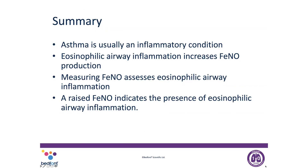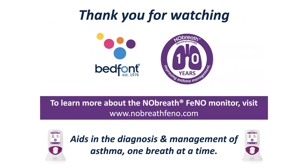The key takeaway is that asthma is an inflammatory condition — specifically eosinophilic airway inflammation — and we know that eosinophilic airway inflammation increases FeNO production. If we measure FeNO production by doing a fractional exhaled nitric oxide test, we can assess the amount of eosinophilic airway inflammation the patient is presenting with. A raised FeNO indicates the presence of eosinophilic airway inflammation. So it's eosinophilic airway inflammation causing a rise in nitric oxide production that we can easily measure. I hope that was helpful — do join us for the others in this series. Thank you for watching.